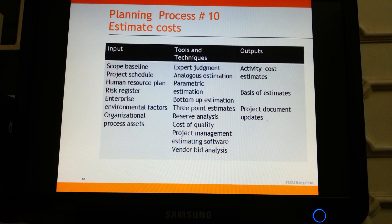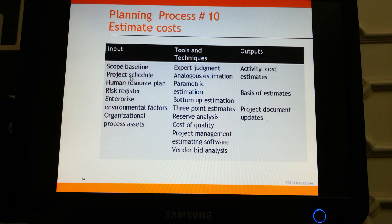Let us discuss estimating cost. At this stage, the inputs include the scope baseline, the project schedule, the human resource plan, the risk register, the enterprise environmental factors, and the organizational process assets.